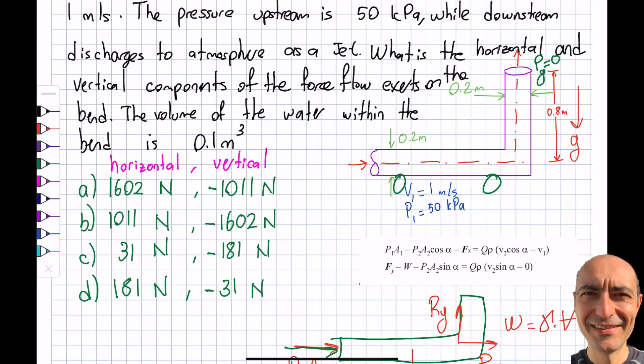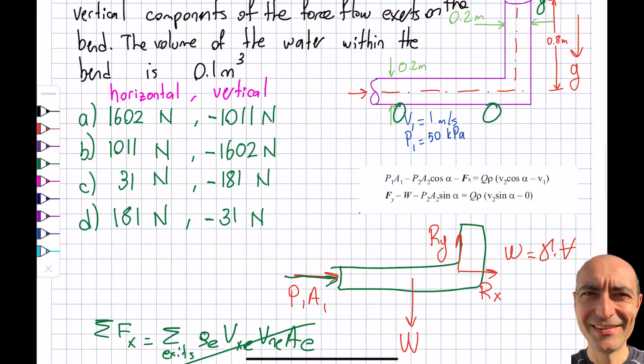Think of this water coming in here and hitting in here and turning. So if I let it go, it's going to go in this direction. Let's say there's no friction, it's going to just fly off. So the force has to be in the positive x direction.